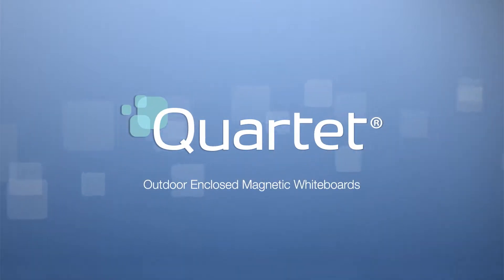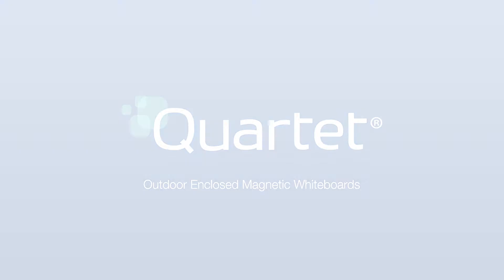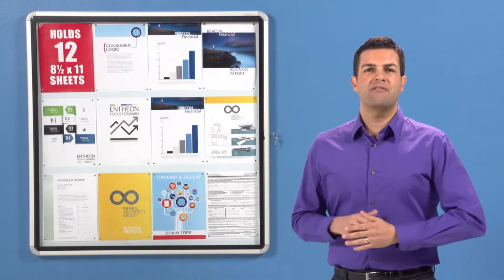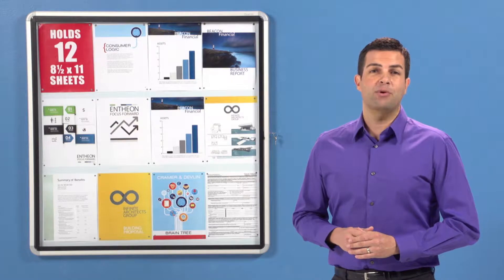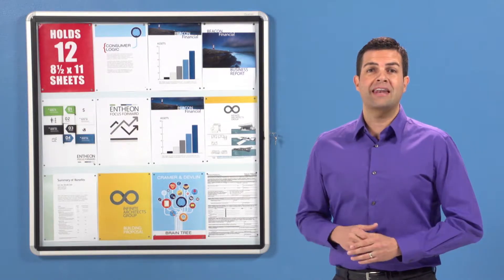Quartet Outdoor Enclosed Magnetic Whiteboards. Here's where necessity and innovation deliver, with a whiteboard surface that doubles as a magnetic bulletin board for outdoor and indoor use.